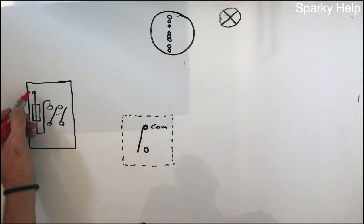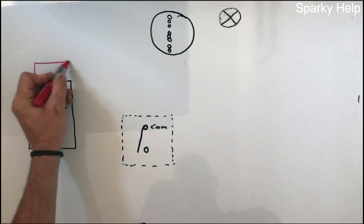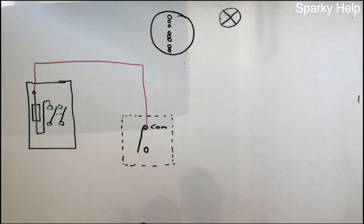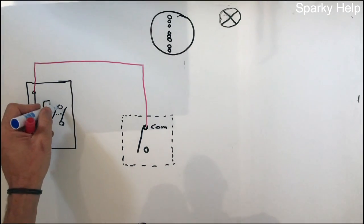So line conductor, because it would be a twin and earth, would come in, connect, and the neutral comes out of its neutral bar and also comes in.